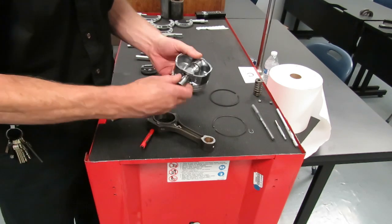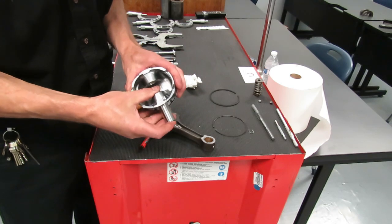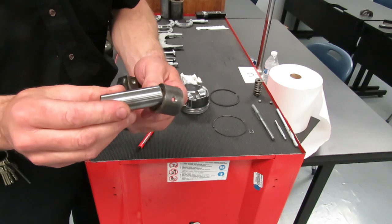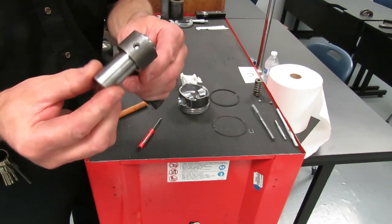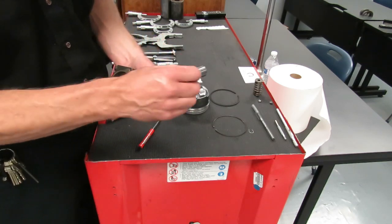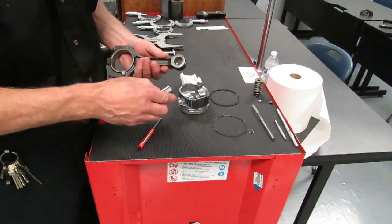And once you get the pin out, you can see that this pin is floating in the piston. Floats in the small end of the rod. That's why we call it a full floater because it floats all the way through and it requires the use of a C-clip.